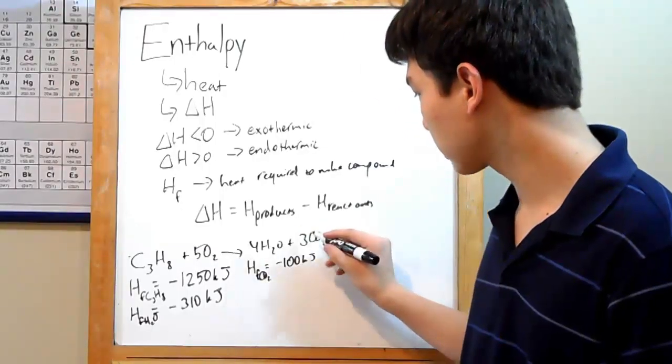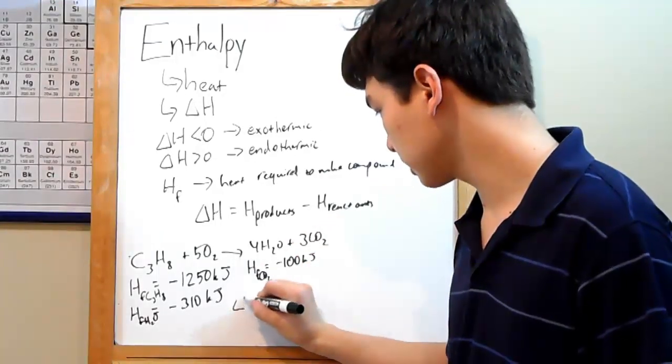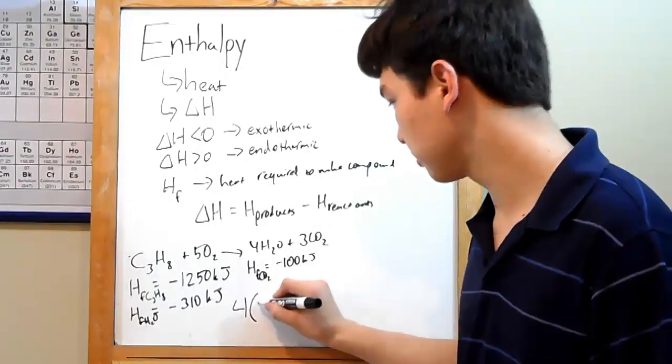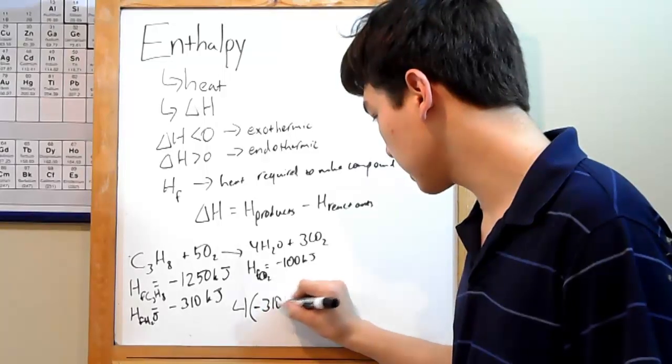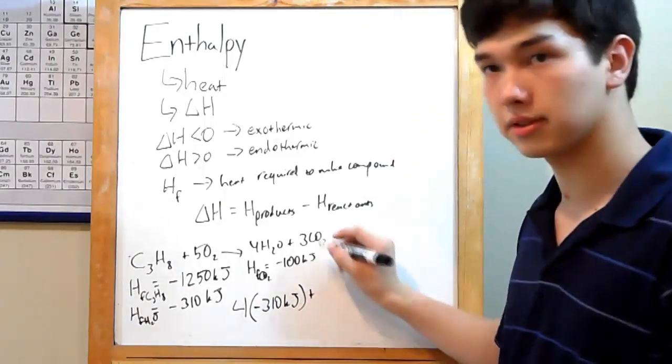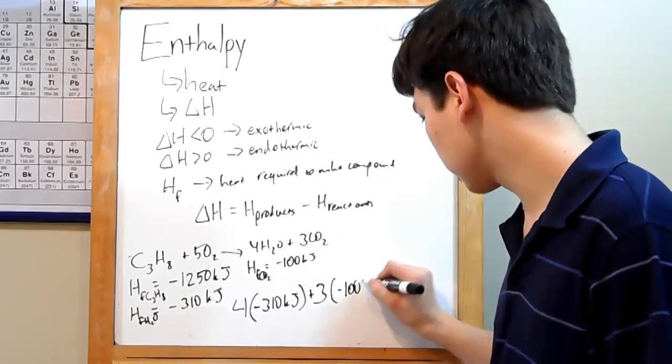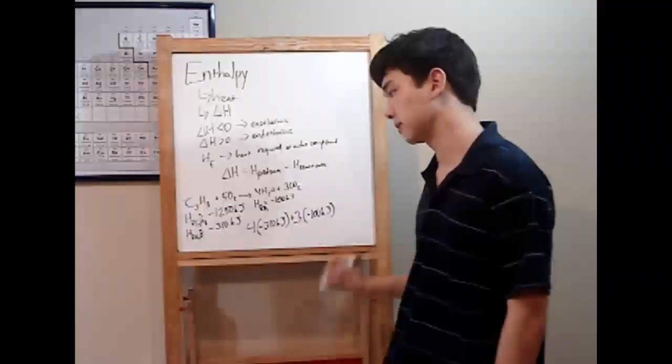So our products are water and carbon dioxide. We have 4 moles of water. So what we actually do is we multiply the heat of formation by 4. So 4 times negative 310 kJ. And we add carbon dioxide. We have 3 carbon dioxide. So plus 3 times negative 100 kJ.